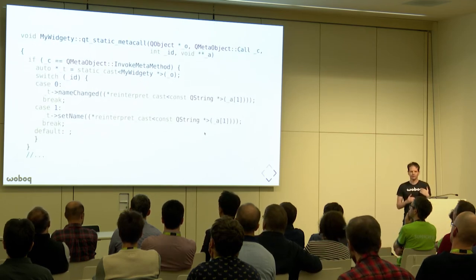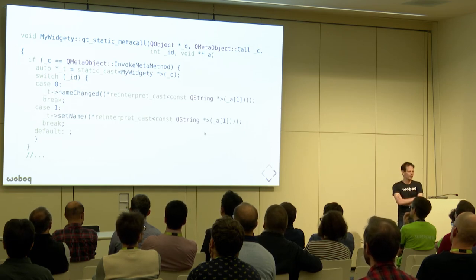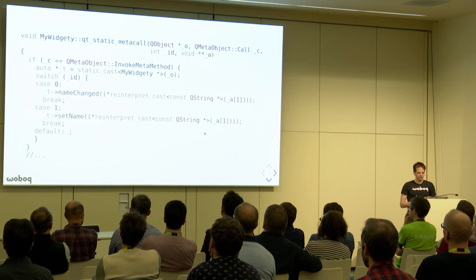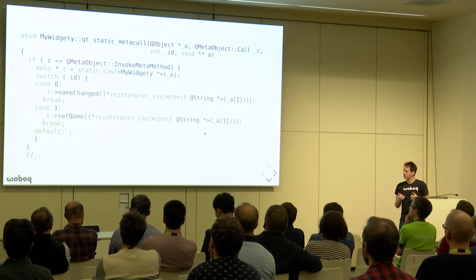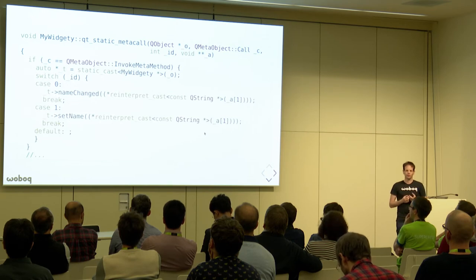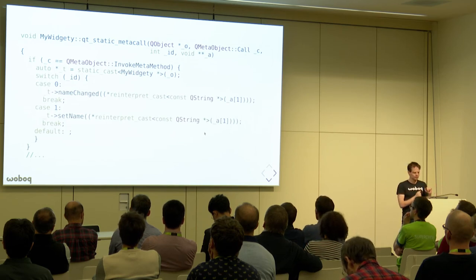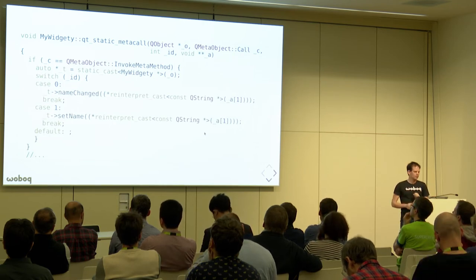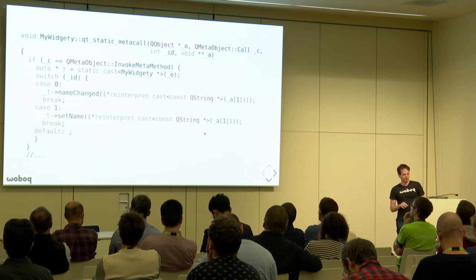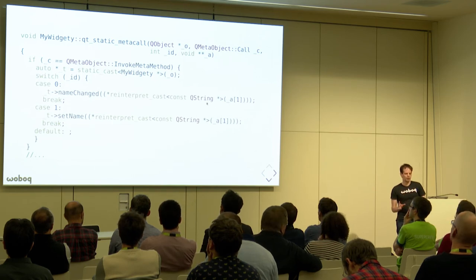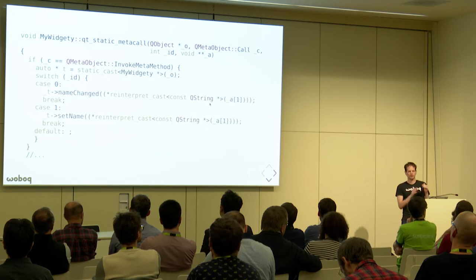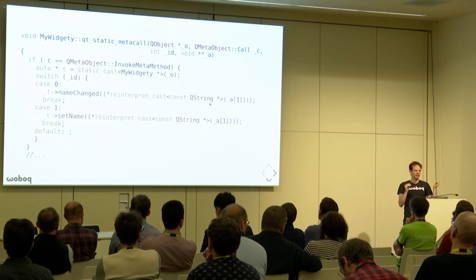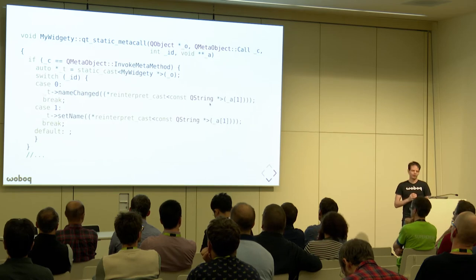The other part is where we call the slots or invocable methods. Given an index and an array of arguments, we call the function. The array of arguments is the same as the one given from the signal — the arguments are on the stack of the thing that invokes the slot. Since we know the type of all the parameters, we know it's the right type, because when we make the connection we know we are connecting a string to a string.